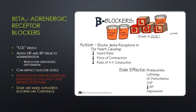Beta-1 adrenergic receptor blockers, or beta blockers, are negative inotropes, negative chronotropes, and negative dromotropes. They decrease the heart rate, the force of contraction, and electrical conduction through the heart. This decreases blood pressure by decreasing the stroke volume and the heart rate, resulting in a decreased cardiac workload and decreased myocardial oxygen demand.